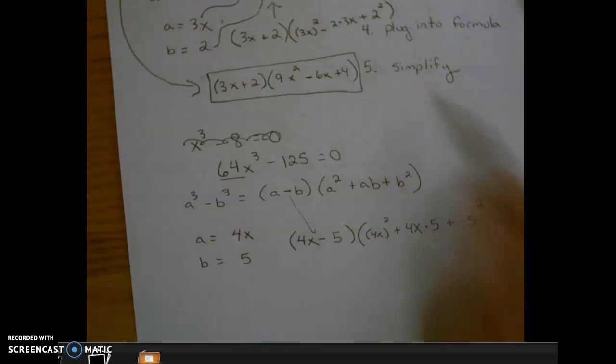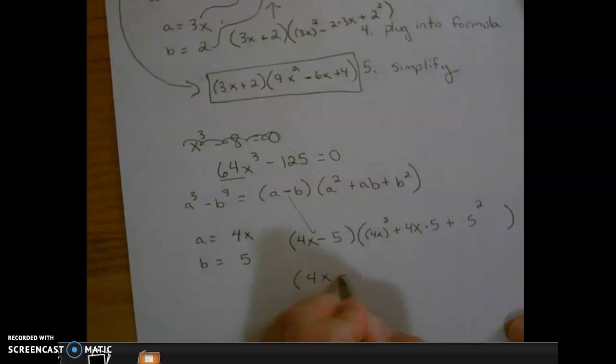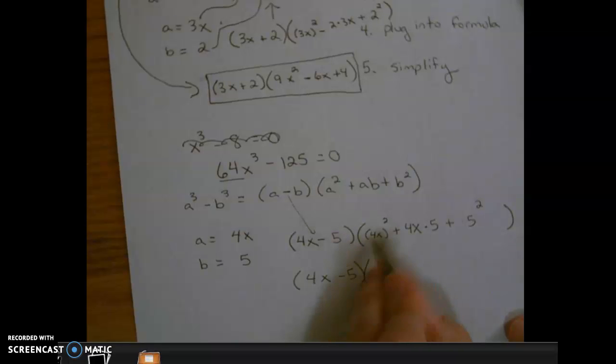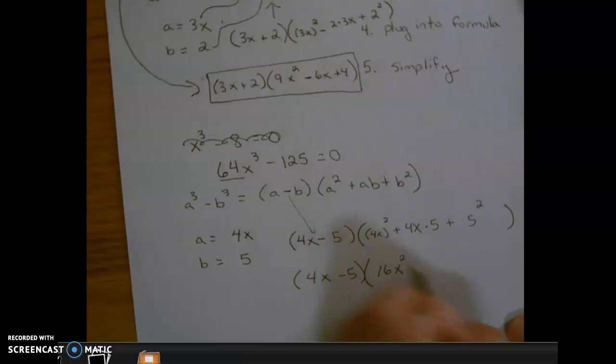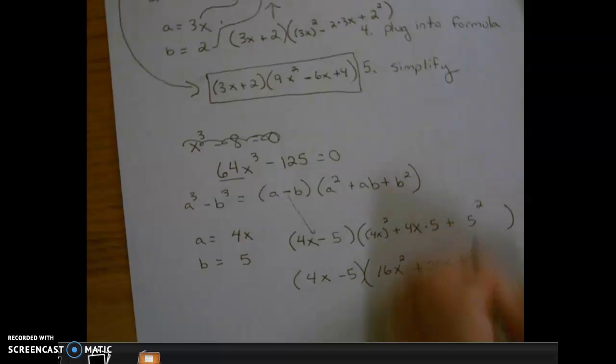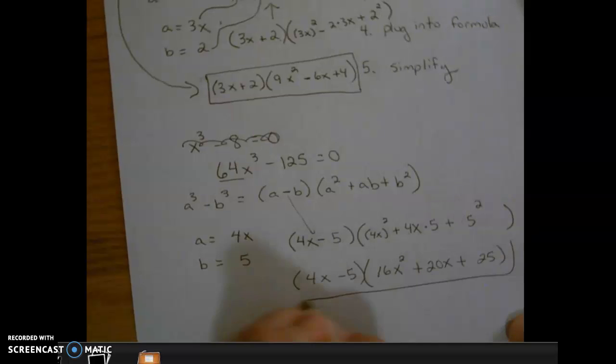Finally, the last step is to simplify. This first one stays the same. Simplifying this one, we're going to square the 4, square the x, multiply 4x and 5, and square the 5. And there's our answer: (4x - 5)(16x² + 20x + 25).